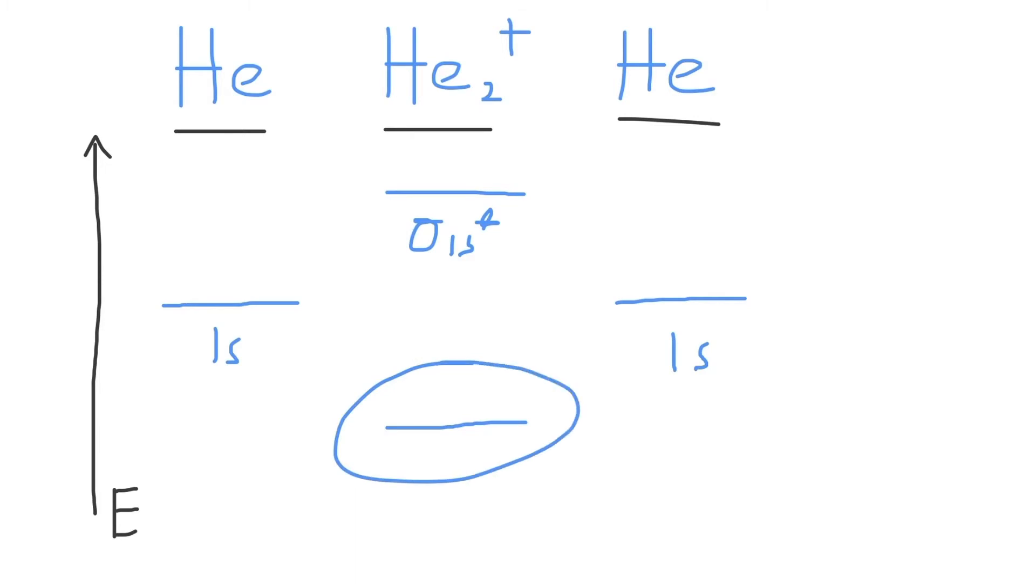And the one that is lower in energy is a bonding molecular orbital called the sigma 1s bonding molecular orbital. Remember to connect these molecular orbitals with your original atomic orbitals for each individual helium atom.